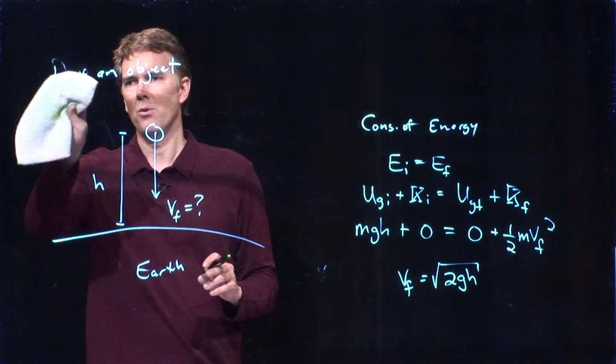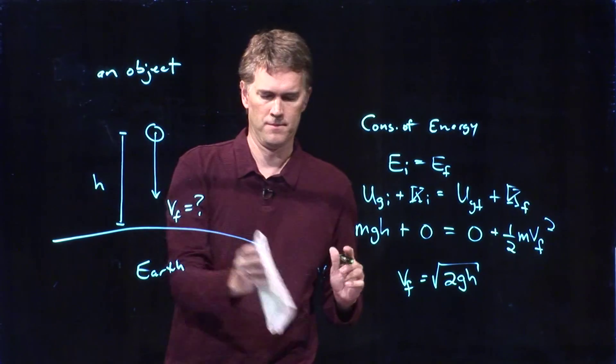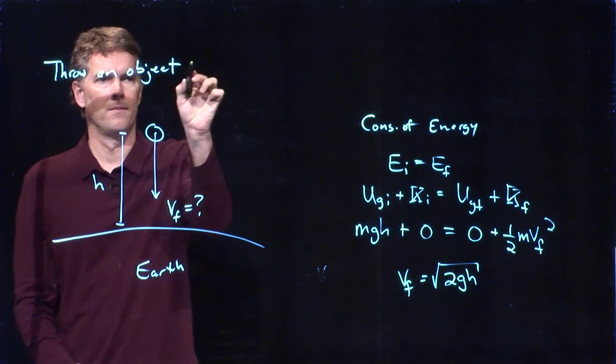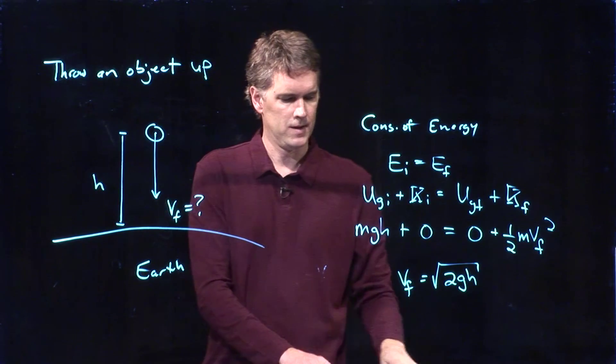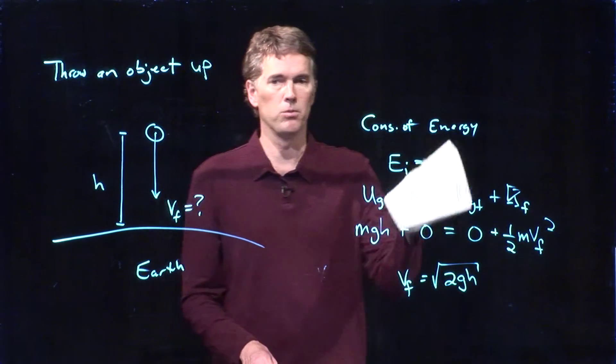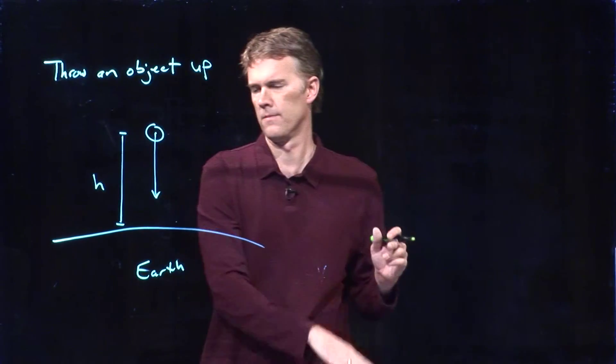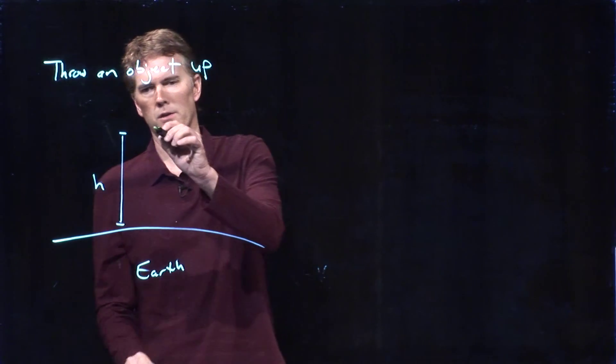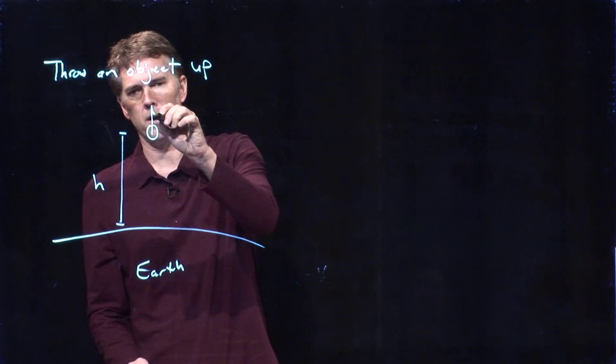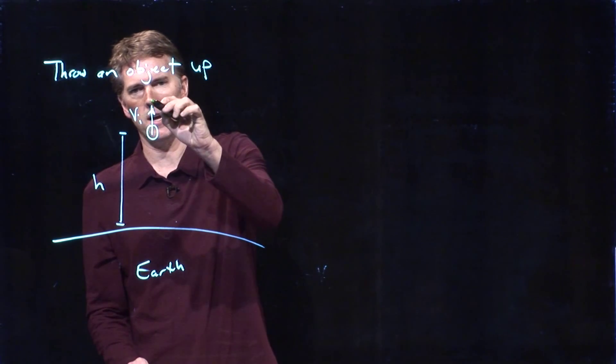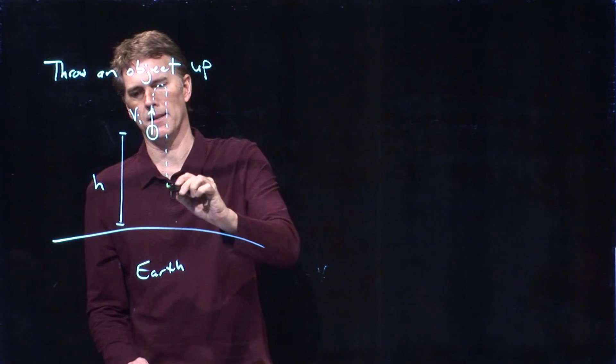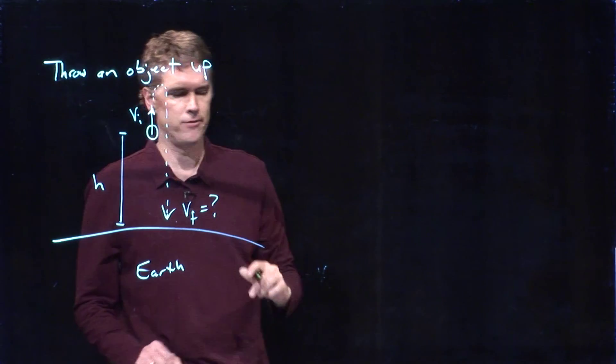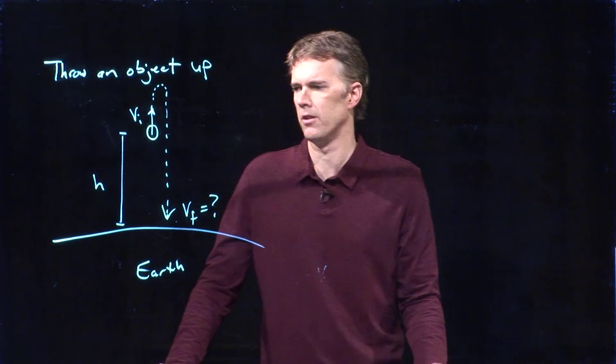Let's throw the object up and calculate what the vf is when it comes back down. So instead of dropping this object straight down, we're going to throw it up at initial speed vi. It's going to go up for a little bit, then come back down and hit the ground at vf. Let's see if we can figure out what that vf is.